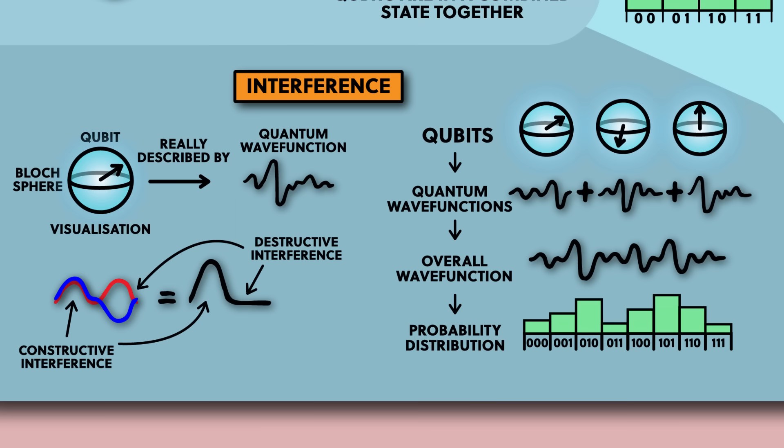Remember that even though the quantum computer can be in a superposition of millions of states at the same time, when we measure it we only get a single state out. So when you're using a quantum computer to solve a computation problem, you need to use constructive interference to increase the probability of the correct answer, and use destructive interference to decrease the probabilities of the incorrect answers, so that when you measure it the correct answer will come out. Now how you do this is in the realm of quantum algorithms, and the whole motivation behind quantum computers is that theoretically there are a bunch of problems that you can solve on a quantum computer that are thought to be intractable on classical computers.